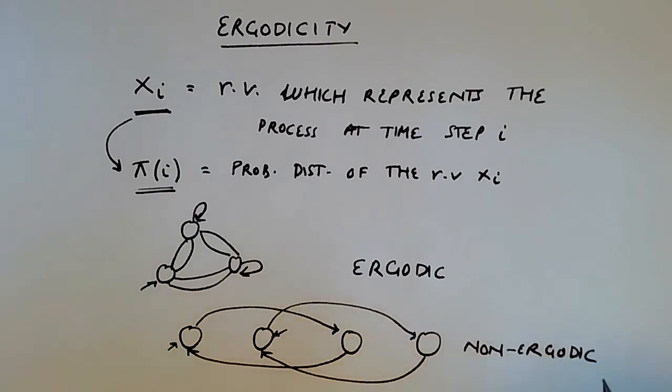So this would be a non-ergodic Markov chain. And there are other situations where you would have a non-ergodic chain and the initial memory would be retained.